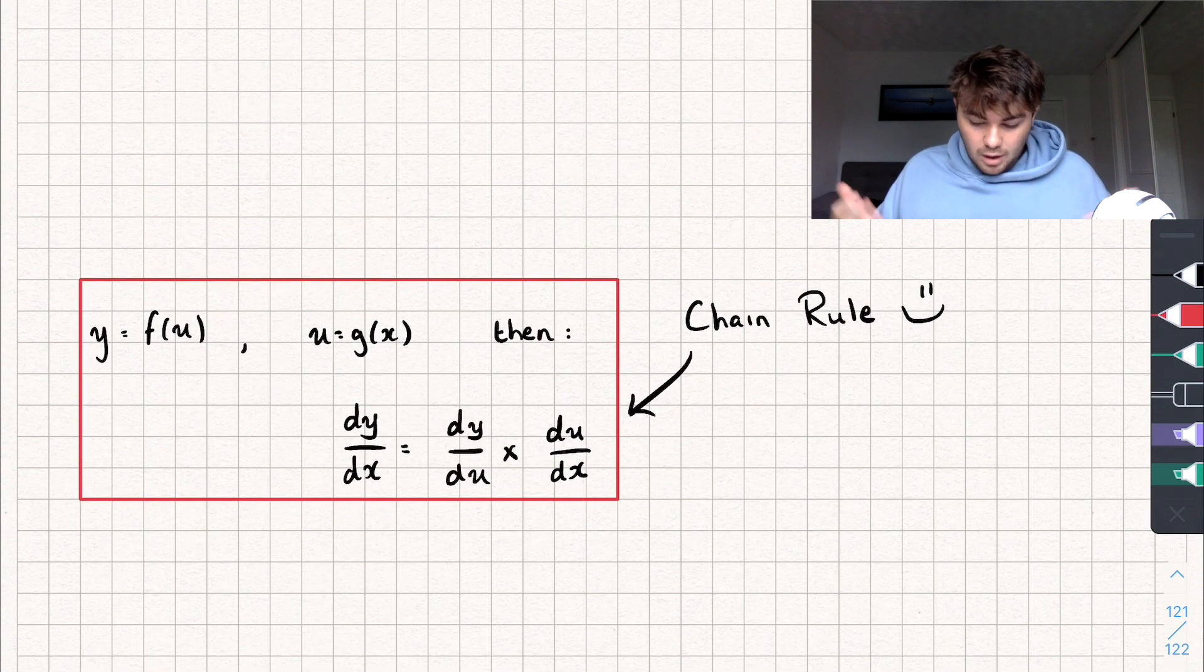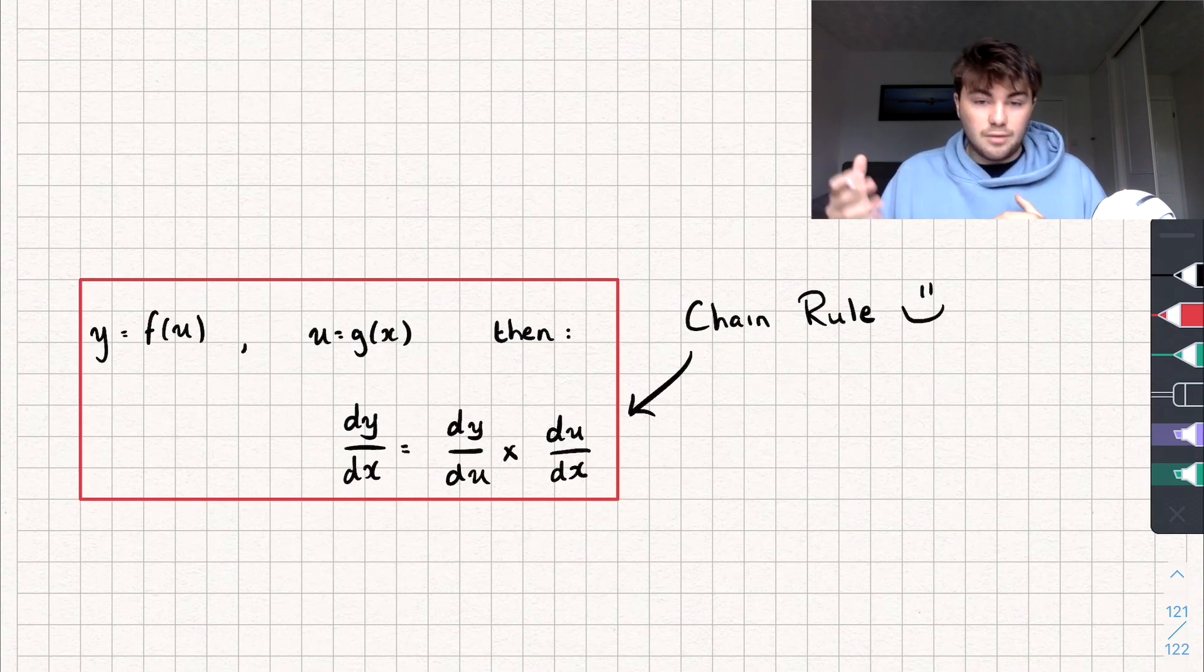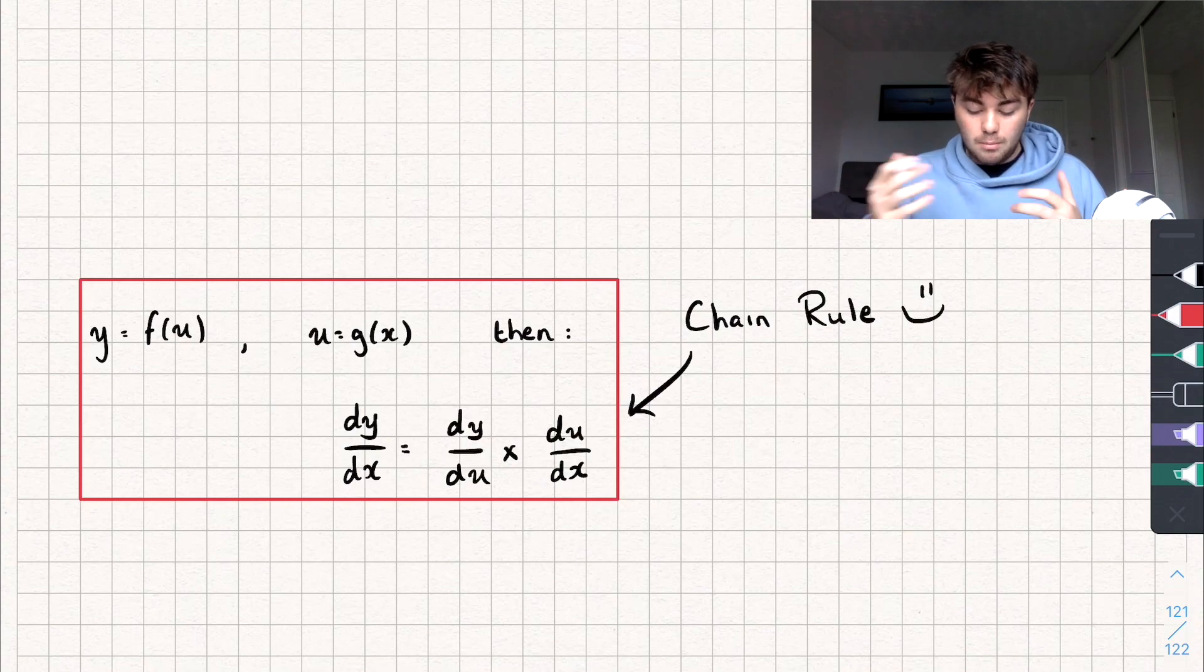So, this is the chain rule. I've rewritten it in this nice red box. It says y equals f of u, and if u equals g of x, then dy by dx is equal to dy by du multiplied by du by dx. Pretty easy.